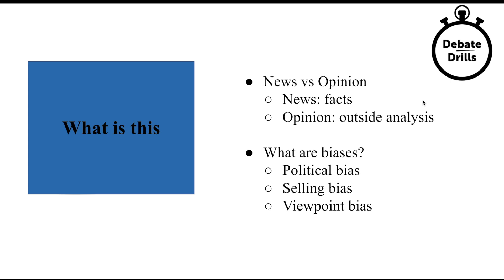What are biases? Biases are anything that affect your interpretation of facts, or really just anything that affect your opinion. In debate, there are three main types of biases that we want to be aware of. The first one is political bias. This is when somebody's political beliefs affect the way they interpret facts. So if someone leans more liberal or more conservative, or is a Democrat or a Republican, and they let that affect how they interpret facts, then their articles might be affected by political bias.